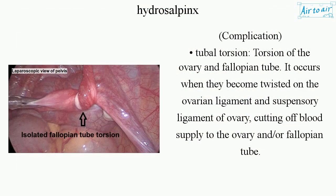Complication: Tubal torsion — torsion of the ovary and fallopian tube. It occurs when they become twisted on the ovarian ligament and suspensory ligament of the ovary, cutting off blood supply to the ovary and/or fallopian tube.